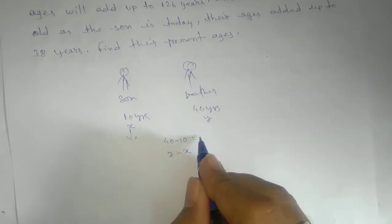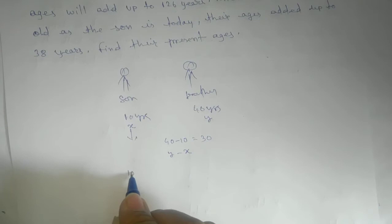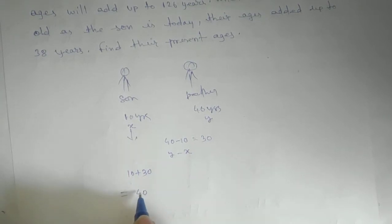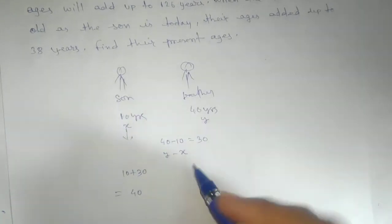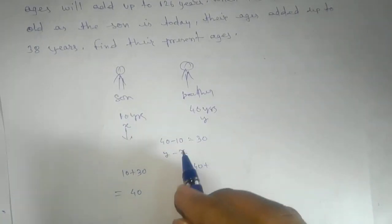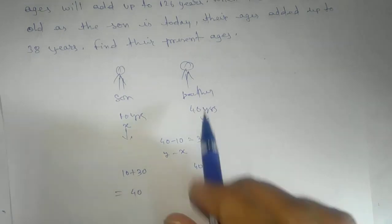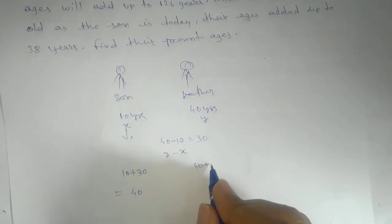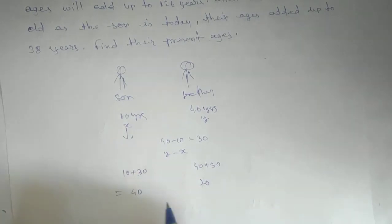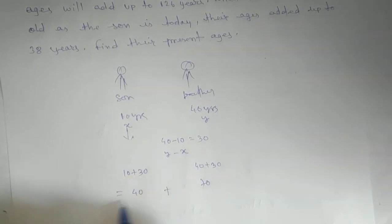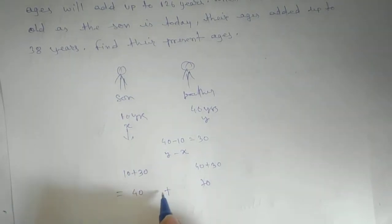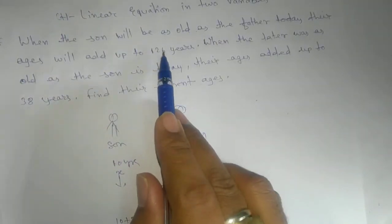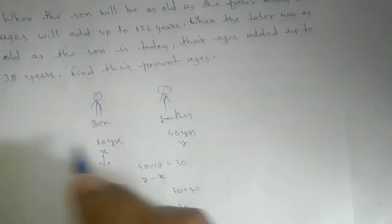Whatever we get — that is 30. If I add 30 with 10, I get 40 (son's new age). Here also we need to add 30, because the father's age will also increase by 30 years. So we add it and get 70 for the father's new age. Adding them up, we get 110 years. But the condition given is 126 years.